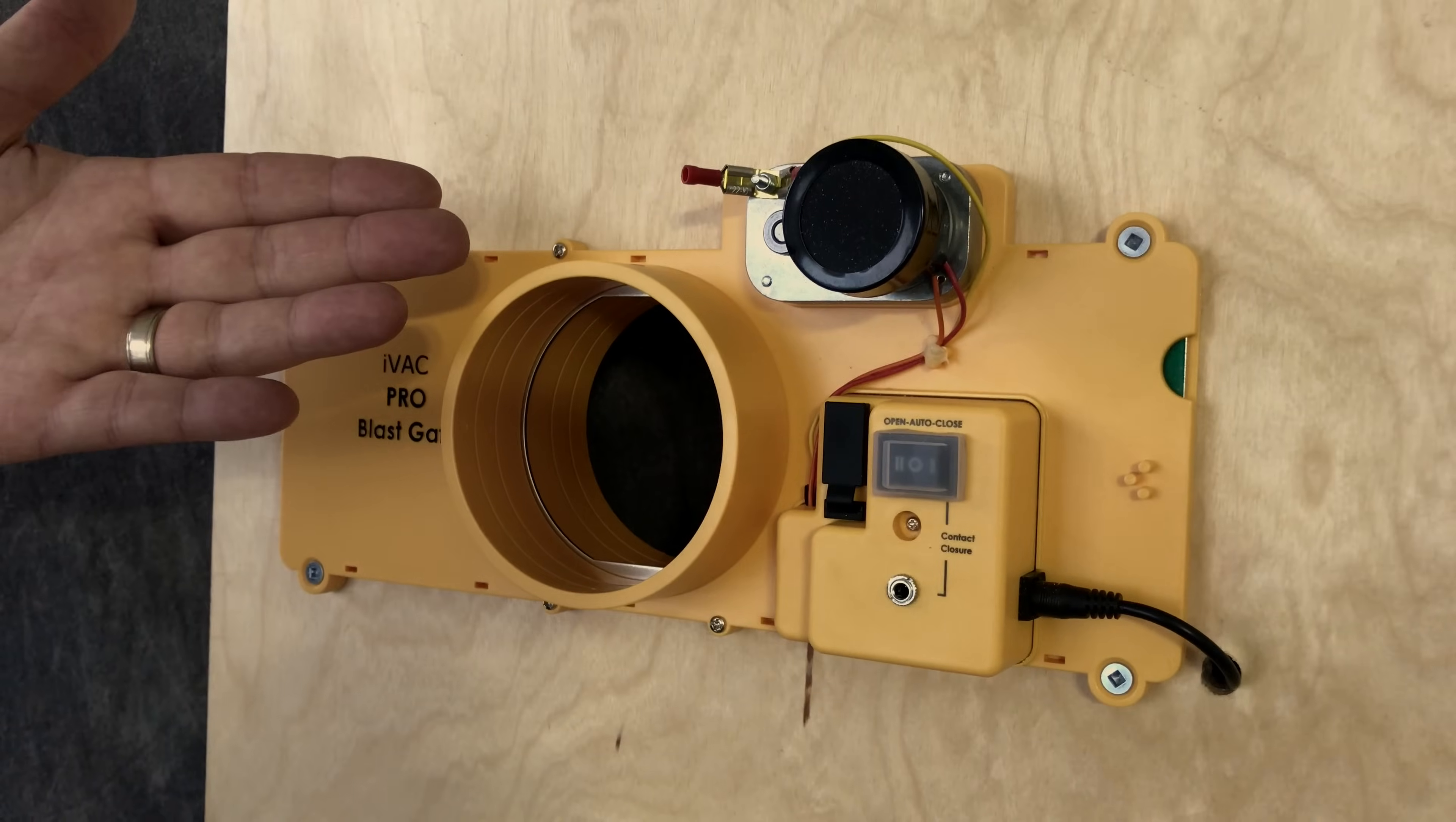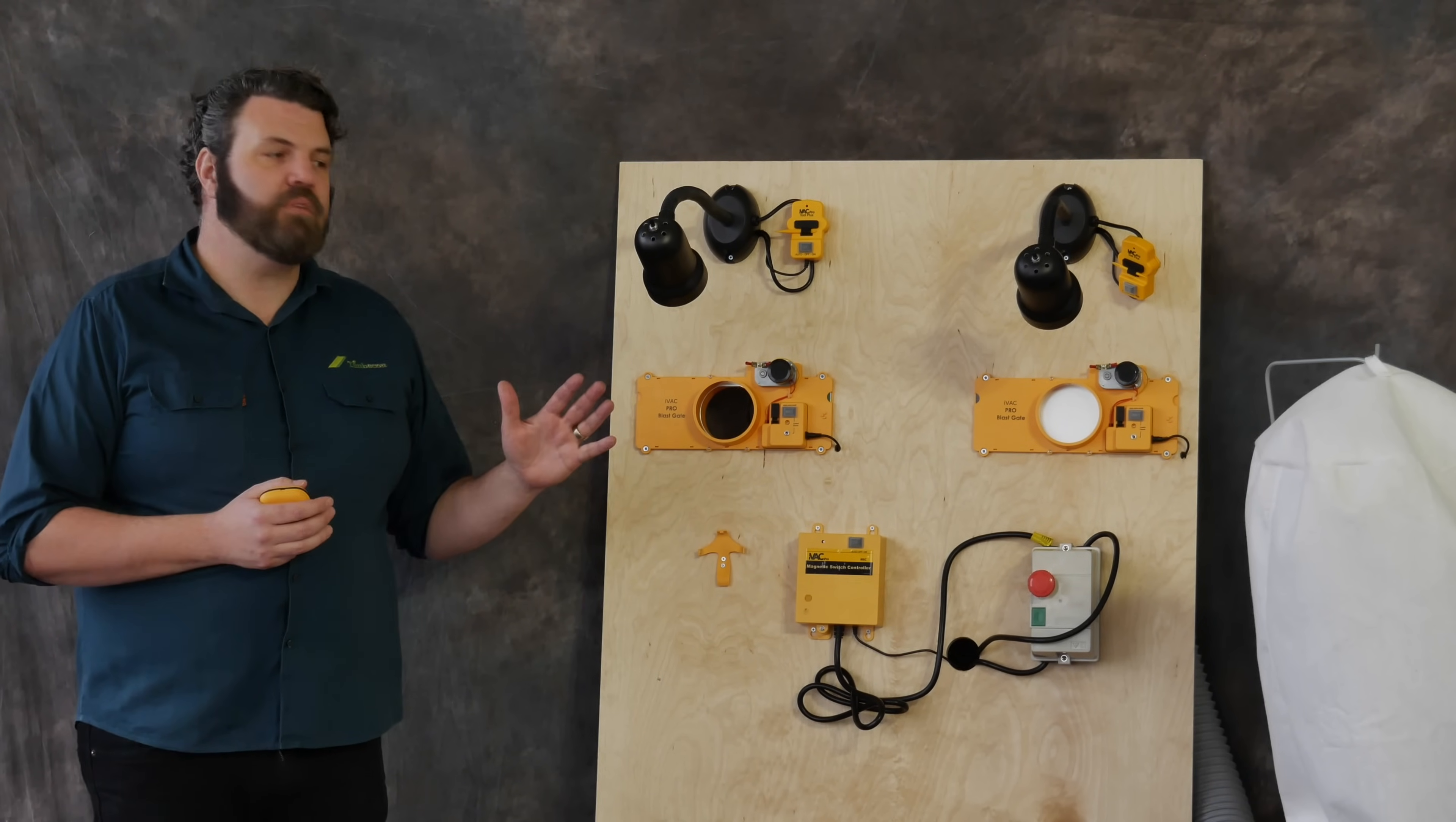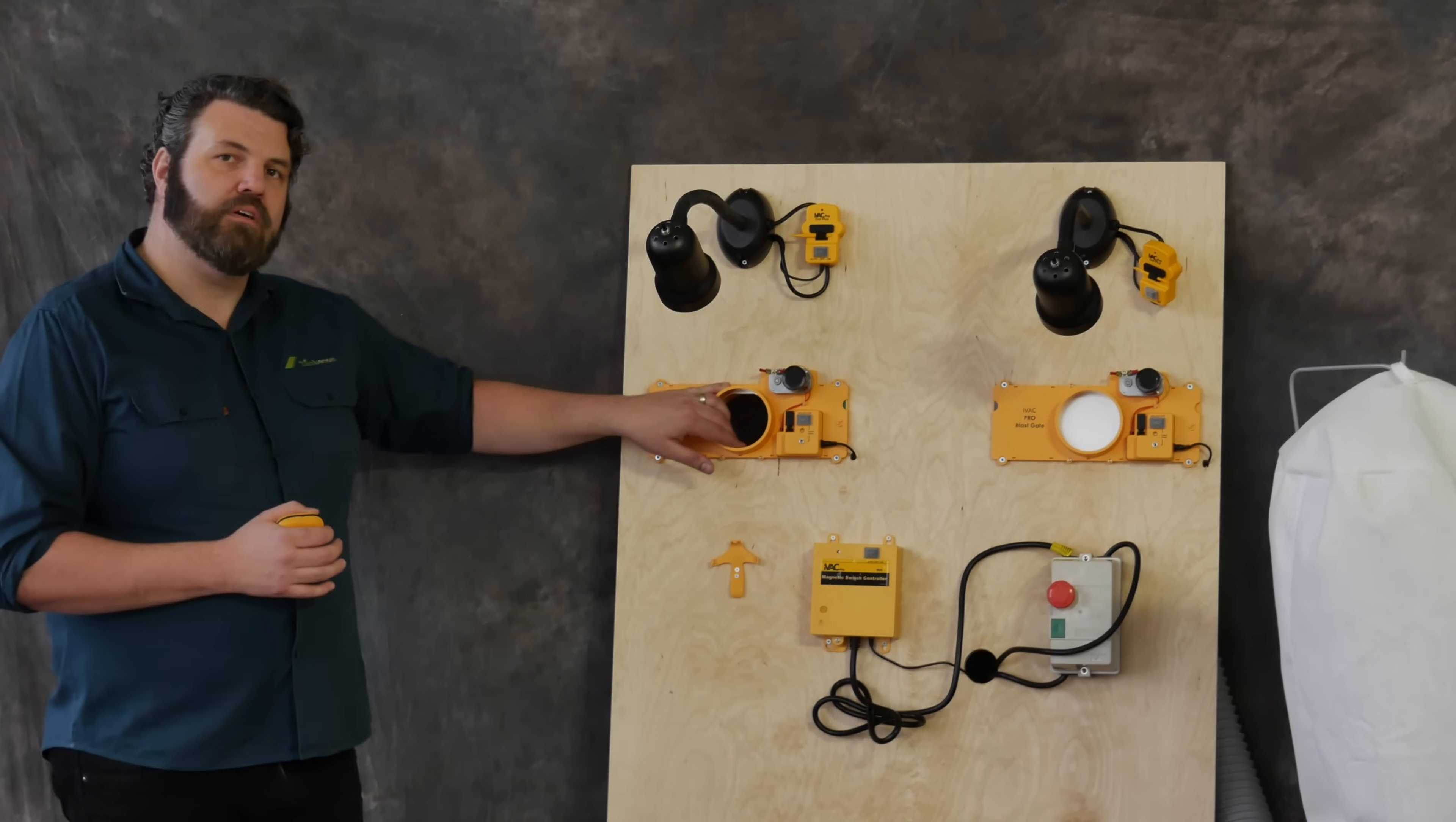What you may have seen over here is the blast gate doing the reverse. One of the issues you have with dust extractors is there always needs to be air flowing through the system. So the problem is if you have four blast gates and all of them are closed at the same time, there's no airflow going to your dust extractor and that can damage your dust extractor. So the IVAC is smart enough that the first blast gate you assign in the system, when all the other blast gates are closed, will remain open to allow airflow to your dust extractor.